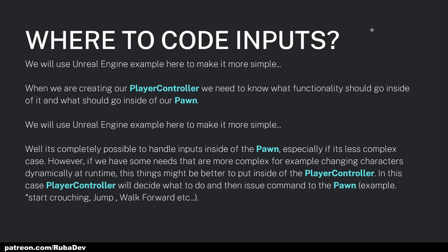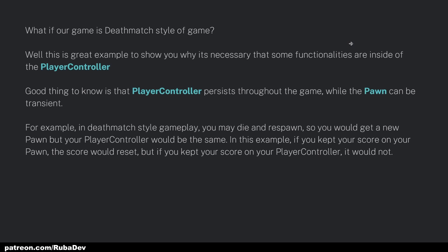What about a deathmatch-style game? In this kind of game, when you die you get respawned — we destroy the Pawn and respawn it again. This is a great example of why some functionalities need to be inside the Player Controller. The Player Controller persists through the game, while the Pawn can have a short period of life — it can be killed in a deathmatch game and then respawned.